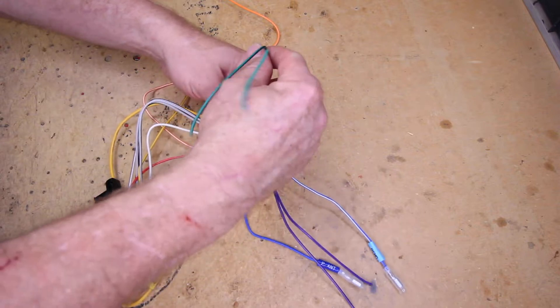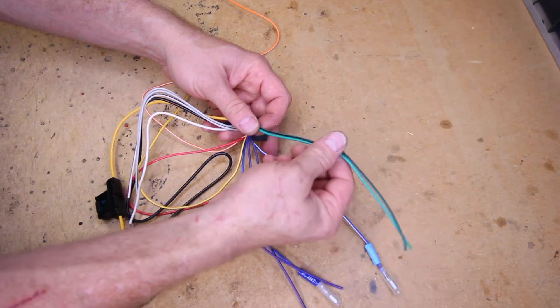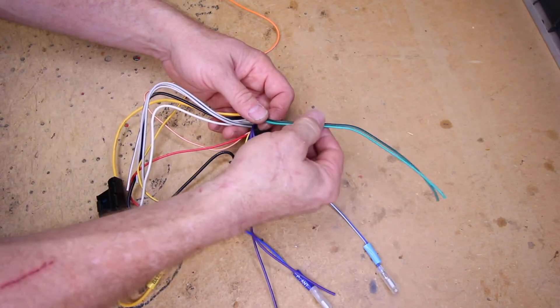You have green, which is number three, which is going to be the rear seat driver's side. There again, a green and a green with a black stripe.